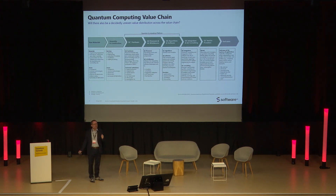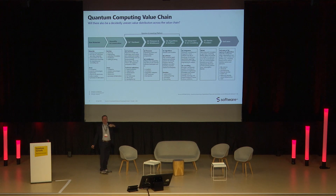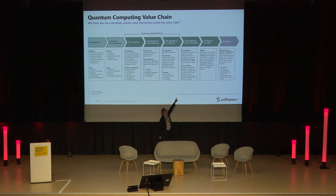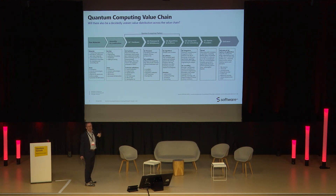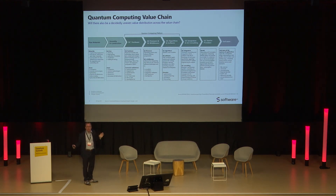There are two things you should do with that value chain matrix. The first one is: if you want to engage in quantum computing, you need to identify your sweet spot. Software AG — we don't do anything in hardware. We are just quantum computing integrators, just in that corner. Your position might be different. Second, if I were a top manager, I would look at the value chain and try to find out where most of the value is created, because I want to be there — not in materials and mining somewhere in Australia.